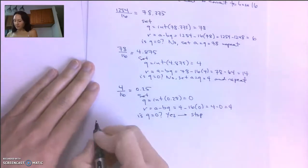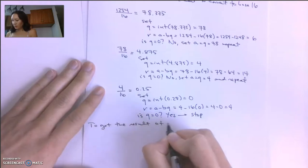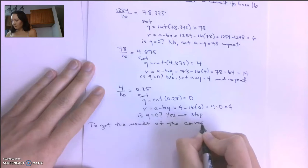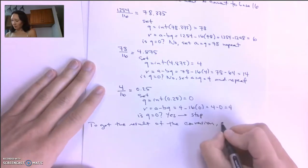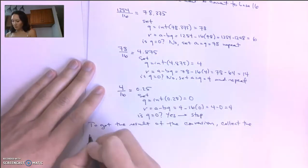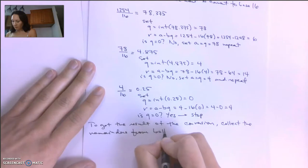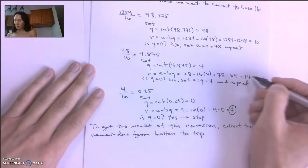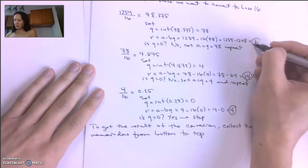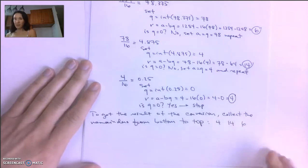Now at this point, to get the result of the conversion, we want to collect all the remainders from bottom to top. So my first remainder, starting from the bottom, is 4, then 14, then 6. So my remainders are 4, 14, and 6.